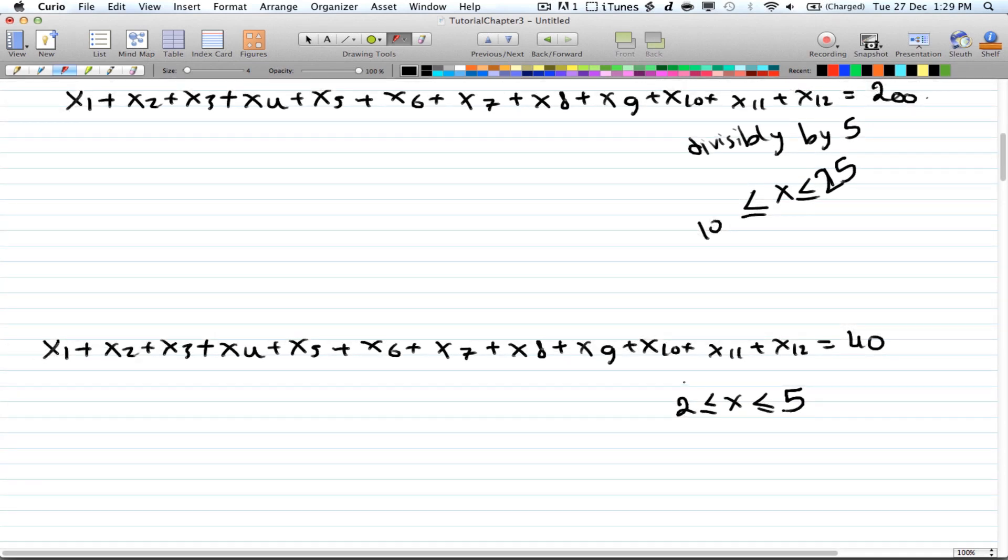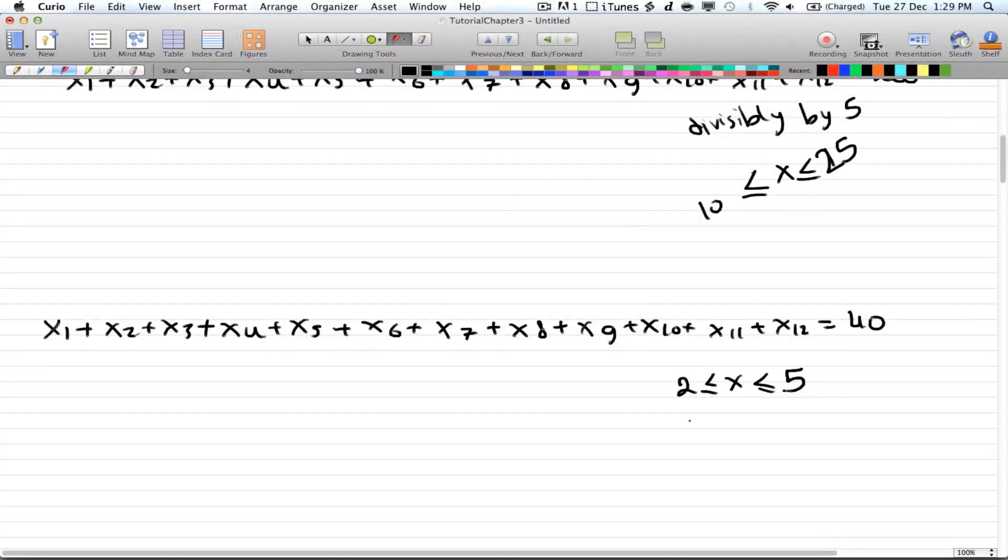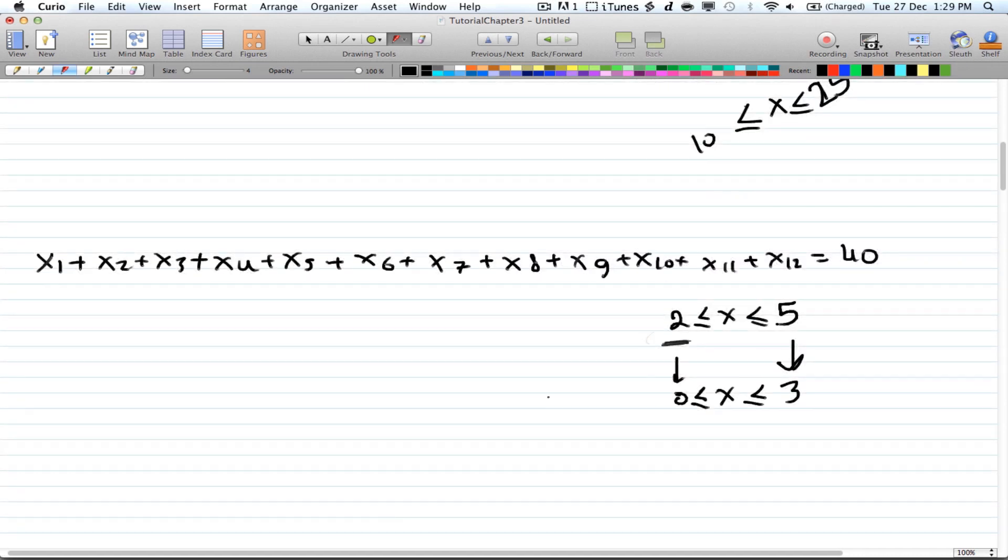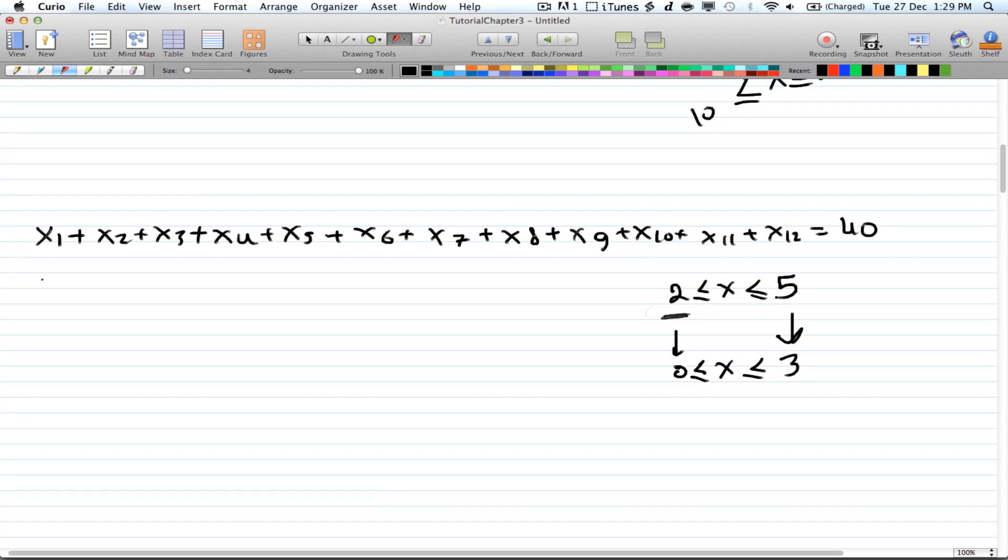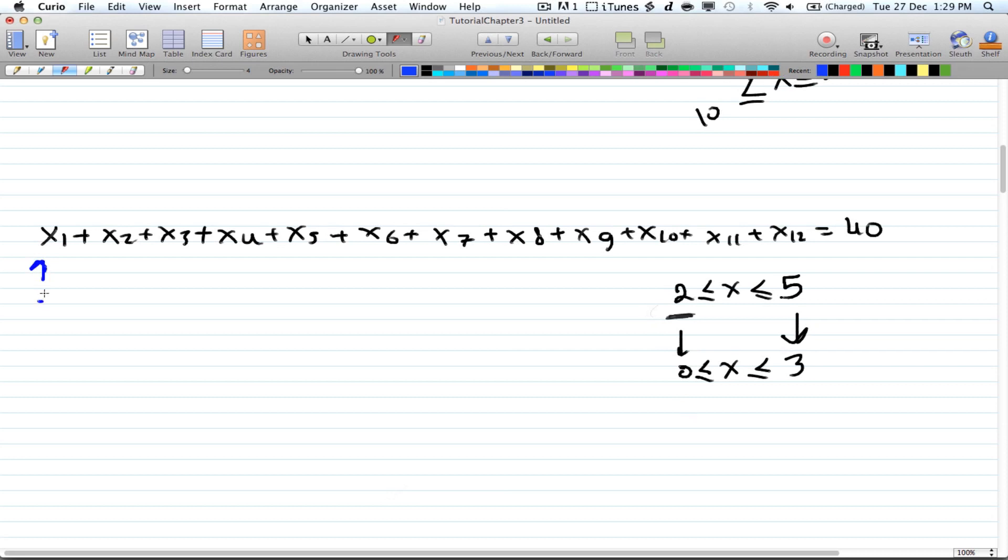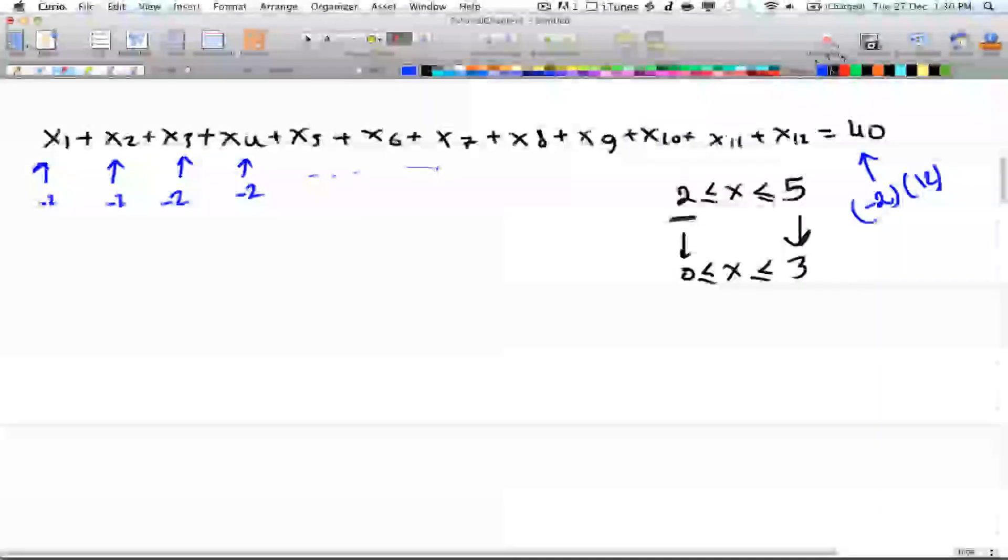So now we're done with one half of setting up the problem. The next is to make the condition start from 0. So you want to get rid of this 2, you want to make it 0 is smaller than x, smaller than whatever this will be. And since we're only subtracting 2, then this will be 3. So subtract everything by 2. So each of these x's will be subtracted by 2.